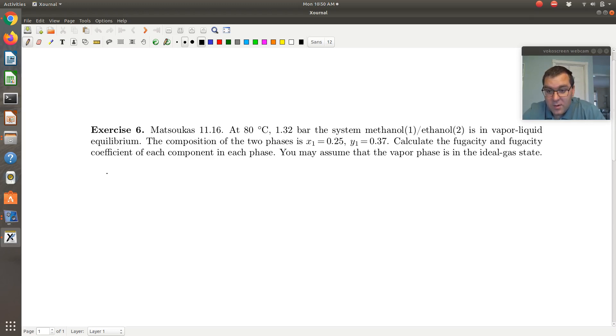Well, that would tell me that the fugacity of component one in the vapor phase, where we can assume the vapor phase is an ideal gas, is just equal to Y1 times P. I know Y1, Y1 is 0.37. I know P, P is 1.32 bars. And if I want to calculate F2 of the vapor, it's just Y2P or 1 minus Y1 times P. Check, check. No problem.